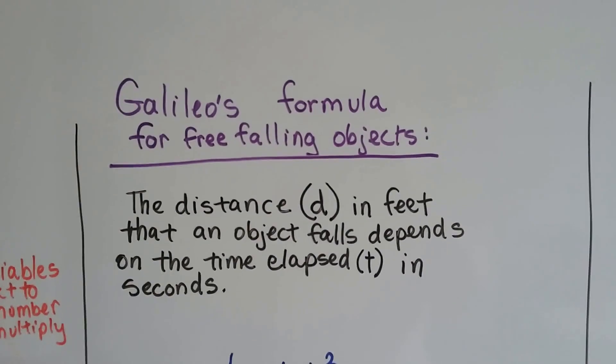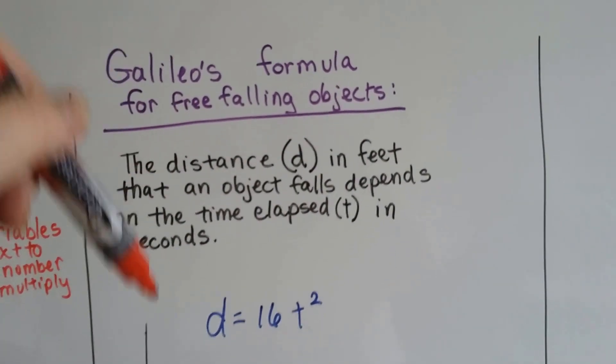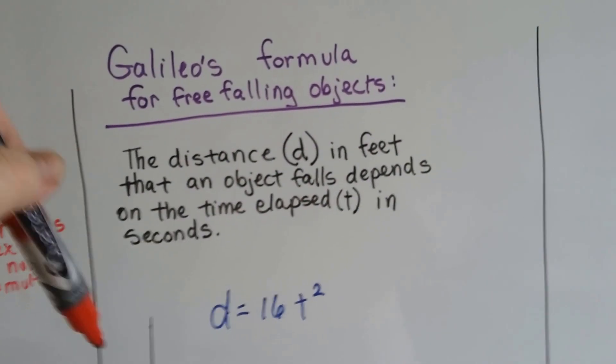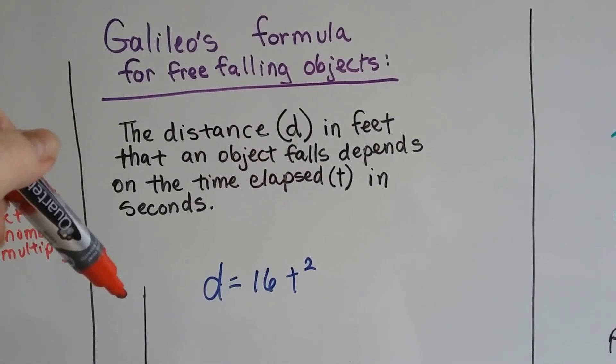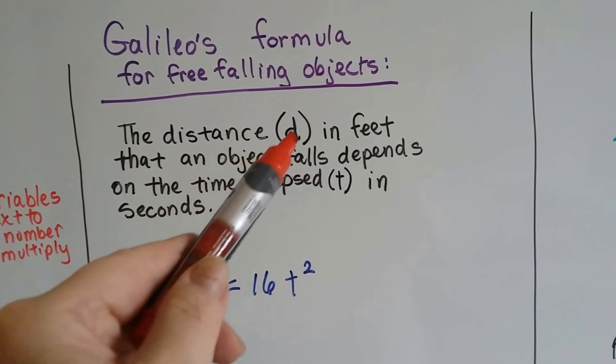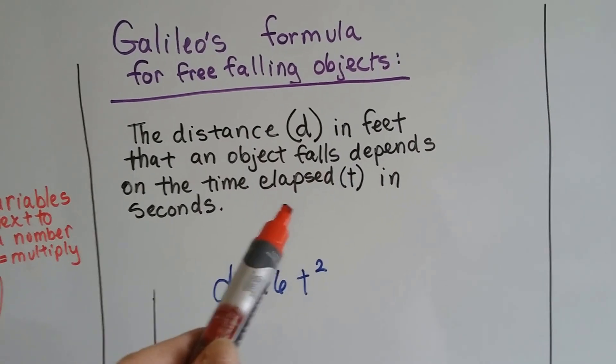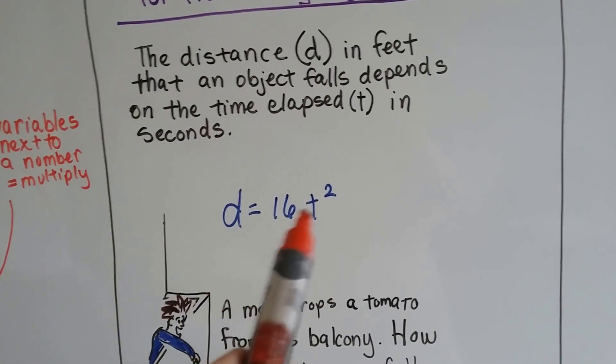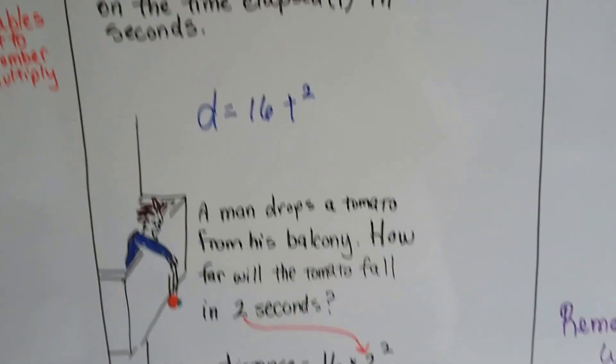Galileo's formula for free-falling objects, he had a formula that said when an object falls, it depends on how much time is elapsed in seconds of how many feet that object would fall. And distance is going to be d, and the time that elapsed is going to be t, and we have to do it in seconds. So here's the formula right here. t is the time, d is the distance. If you notice, we have an exponent here too.